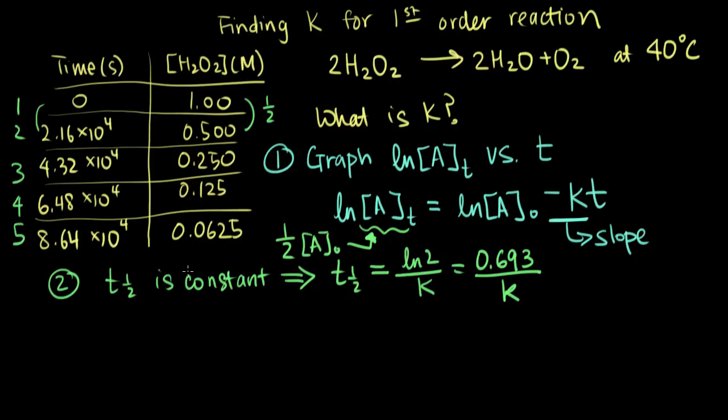Just to be thorough, we can look at some of the other data points and make sure the half-life indeed stays constant. So if we look at points 2 and 3, again, our concentration goes down by half. And 3 and 4, the same is true.